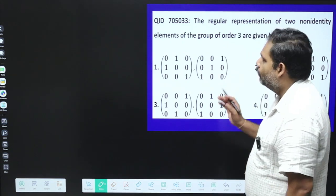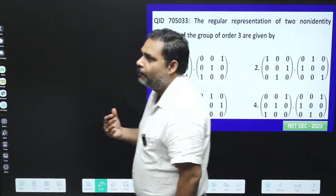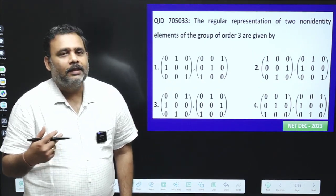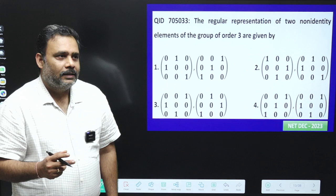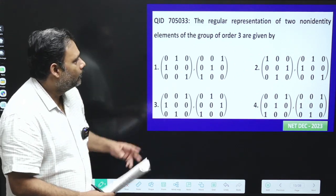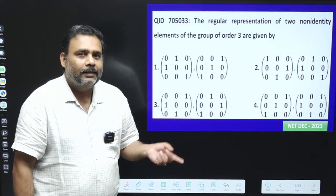What we have, we have a group which has order 3. And if it is order 3, that means if the two group elements will be non-identity, then the third must be identity.